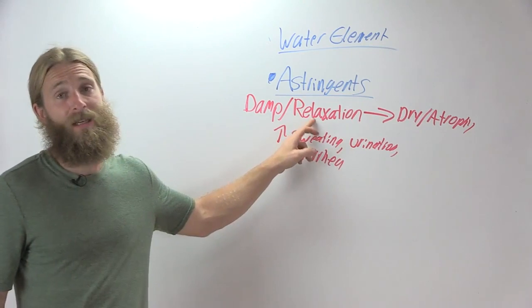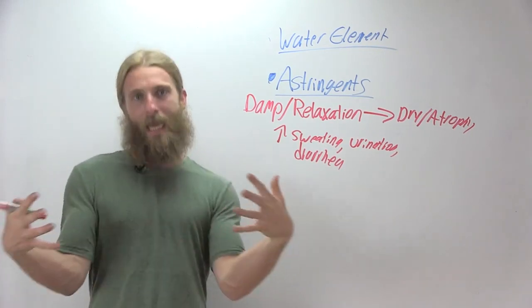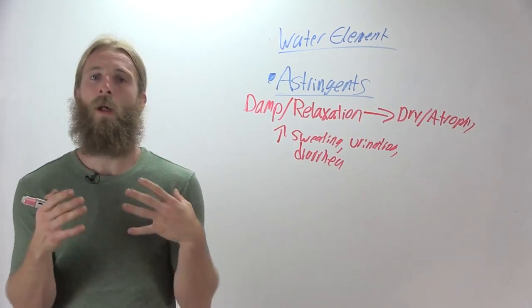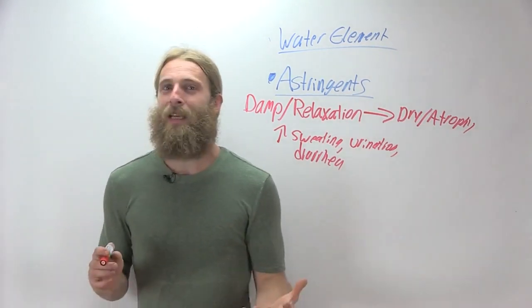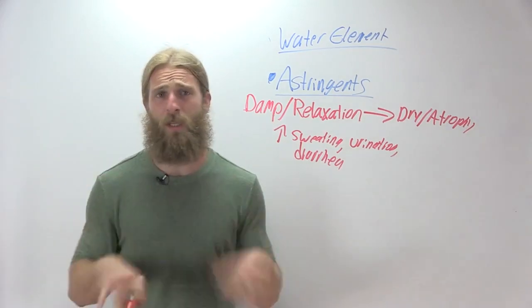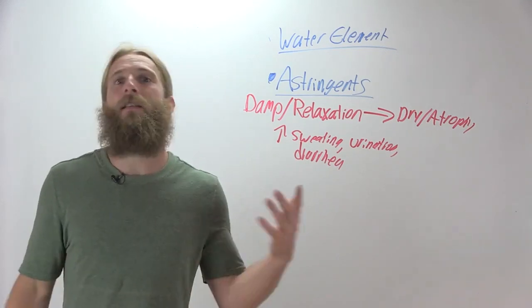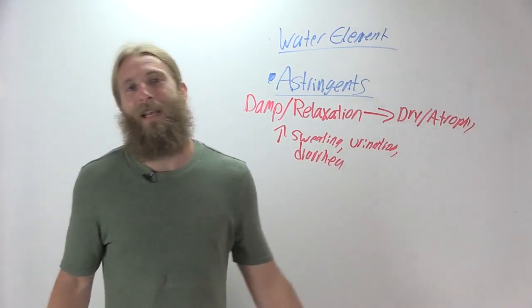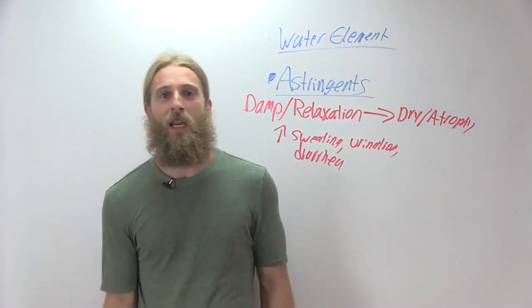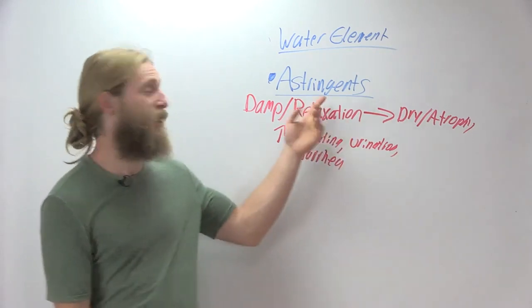And the way that we treat that relaxation is by astringence, by taking that loose, flabby, floppy tissue and tightening it up, bringing more tone back so then it can hold those fluids in. So this is why this can be confusing, but you have to look at it's like if someone's leaking fluids all the time, it doesn't matter how much more fluids you put in their system if they're keeping leaking them out, they're not holding it in. It's like thinking, think of a garden hose with a hole in it. It's like if you're not getting enough water coming out of the sprinkler because there's a hole in the garden hose, it doesn't matter how much more water you force through the hose, you got to patch the hole. And that's what our astringents do.